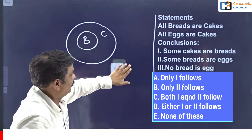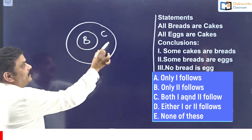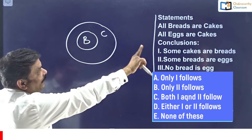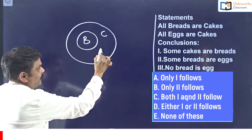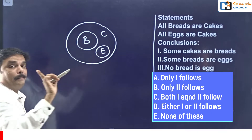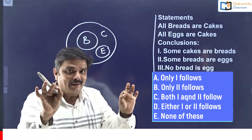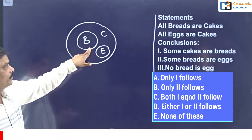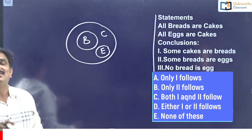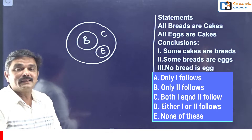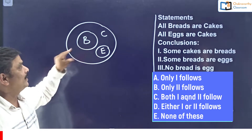Now go for the second statement: All eggs are cakes. According to the basic diagram concept, E should be inside C only. But B and E should not merge with each other in the basic diagram, because if B and E merge, there will be more number of cuts. So in the basic diagram it should be separate. If required, in the alternate diagram you can combine these two.